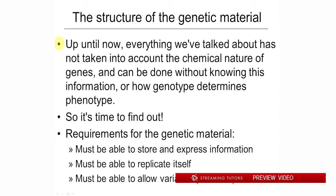Everything we've talked about up until now has not taken into account the chemical nature of the gene. It's also not taken into account how genotype determines phenotype. It's all well and good for Mendel to have said that Big P makes purple flowers, but he had no idea what Big P was, and certainly how whatever it was translated the purpleness into reality.